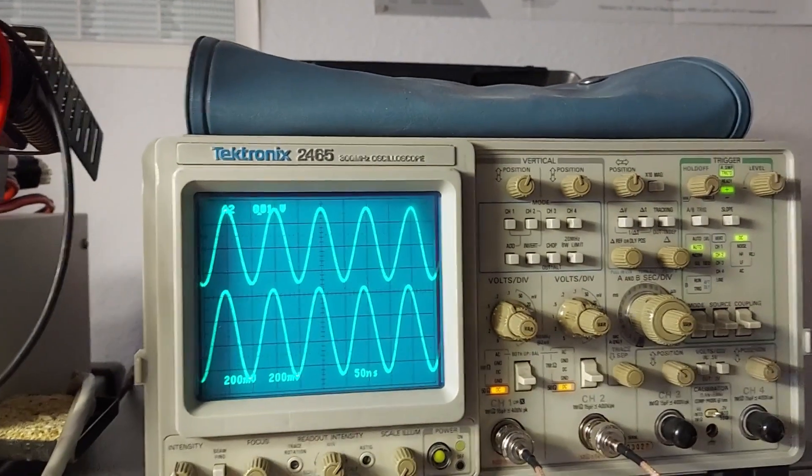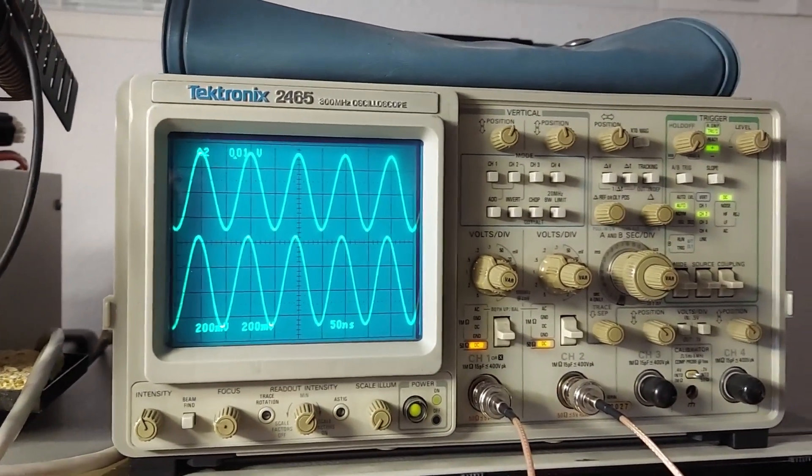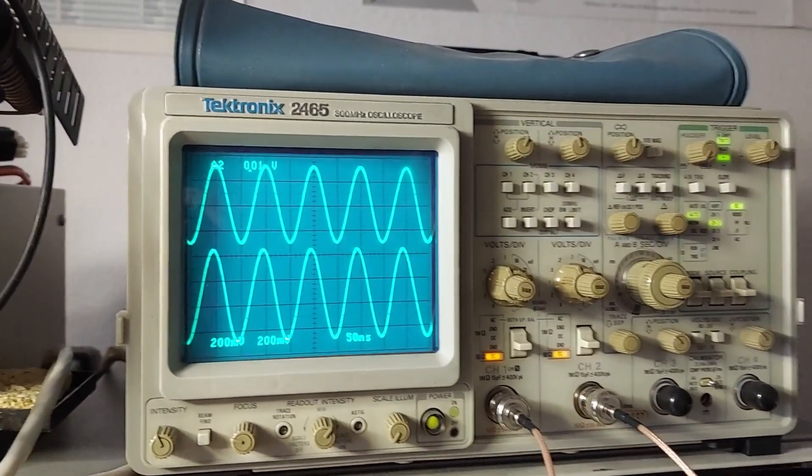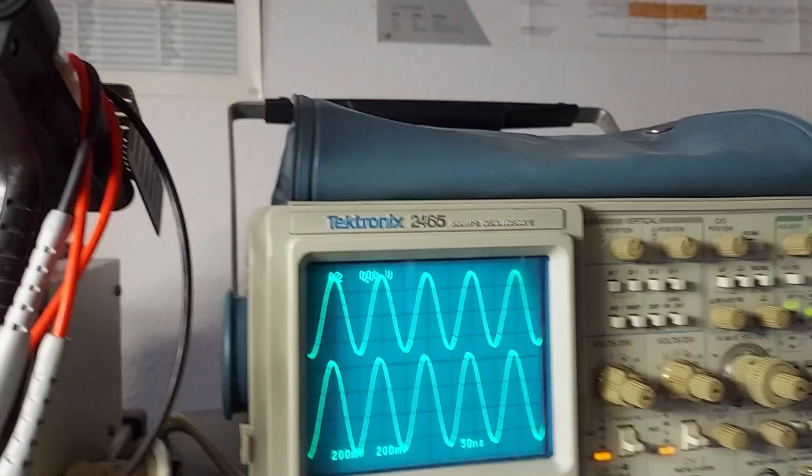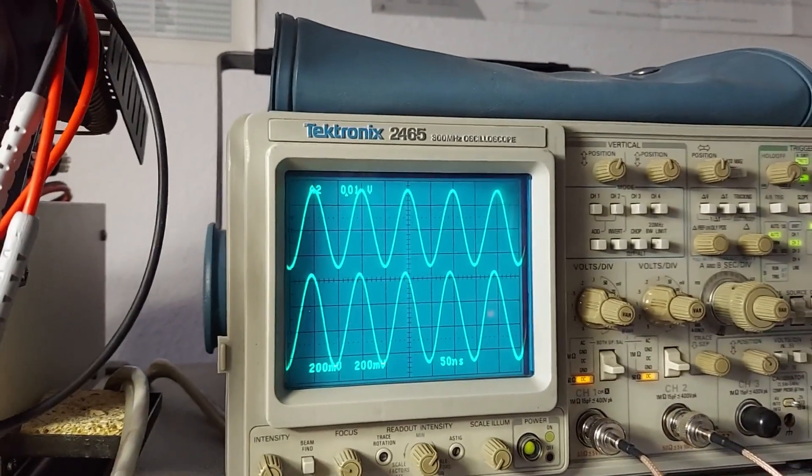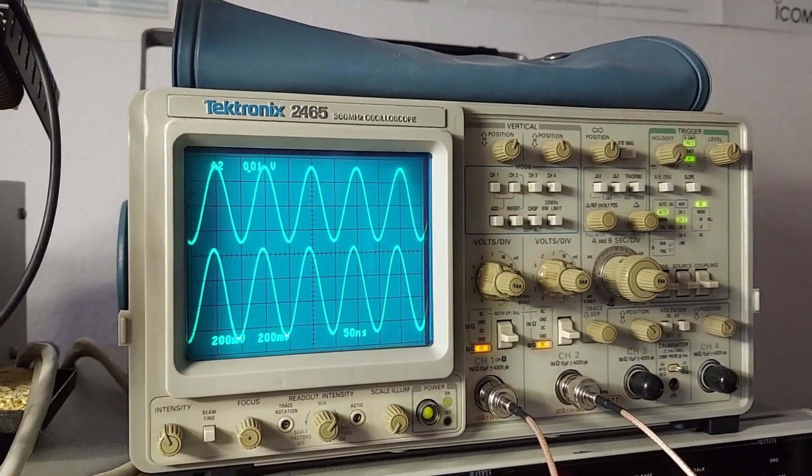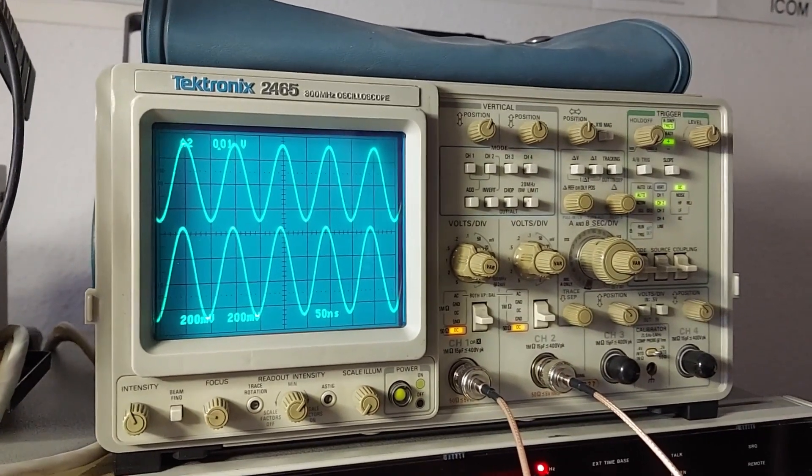Okay, now I have the scope hooked up here. The top trace is the front output of the signal generator. The bottom trace is the 10 megahertz output jack on the back of the unit. Now I have the scope to trigger on channel 2, which is the output on the back of the unit.